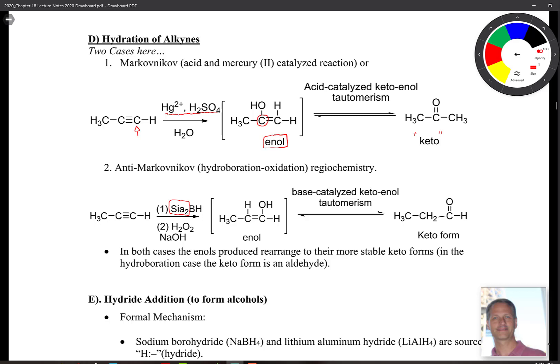If we want to go anti-Markovnikov, then we need to add the BH3 derivative for alkynes, which is SIA2BH. That puts the OH at this outside position, where we have here this interior position. It's still an enol.